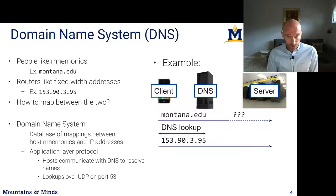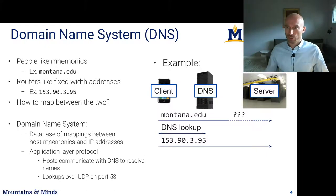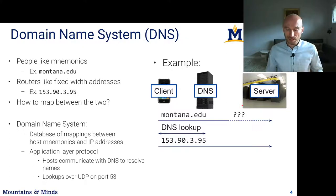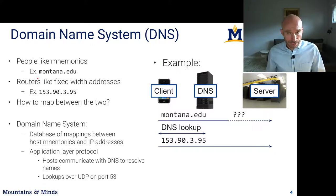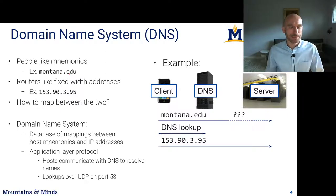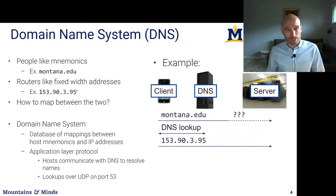The final system to discuss today is DNS, the Domain Name System, which is one of the key enablers of the modern web. The problem DNS solves is the mapping between mnemonics — things people like, such as montana.edu — and things that routers like, which are fixed-length IP addresses, essentially 32-bit numbers. When we discuss the network layer, we'll see how these convert.